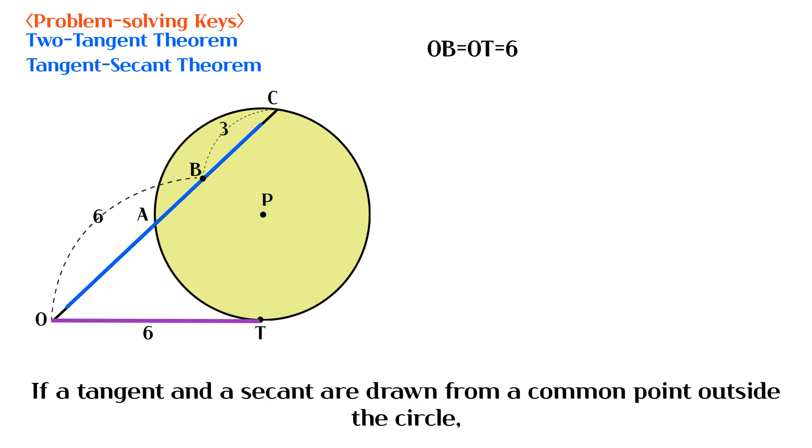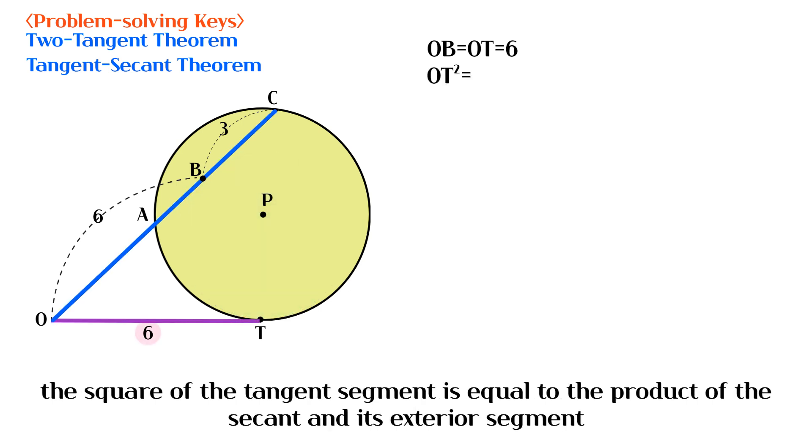If a tangent and a secant are drawn from a common point outside the circle, the square of the tangent segment is equal to the product of the secant and its exterior segment.